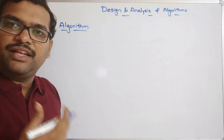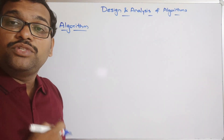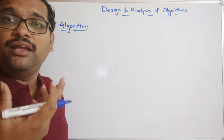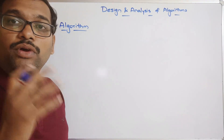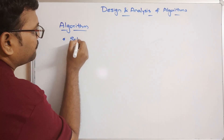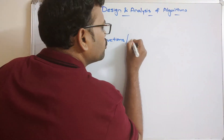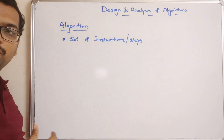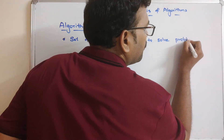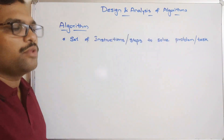Most of you know about this — what is the definition of an algorithm. An algorithm is defined as a set of instructions which are involved to solve a problem or a specific task. If any problem or task is given, these are the steps we have to follow in order to solve or achieve that. So it is a set of instructions or steps to solve the problem or task.